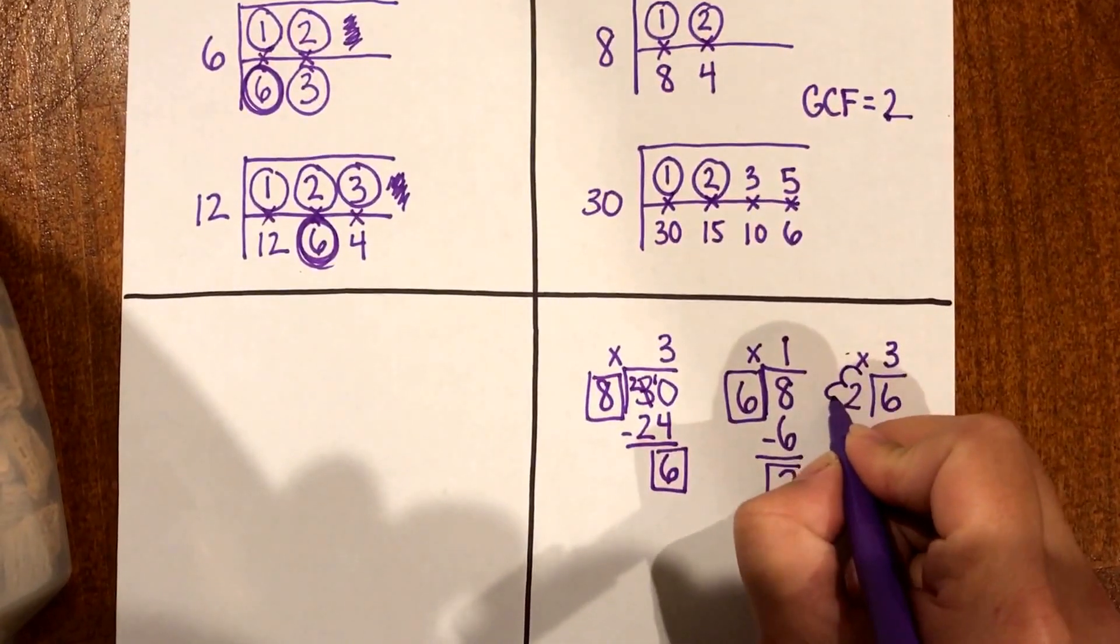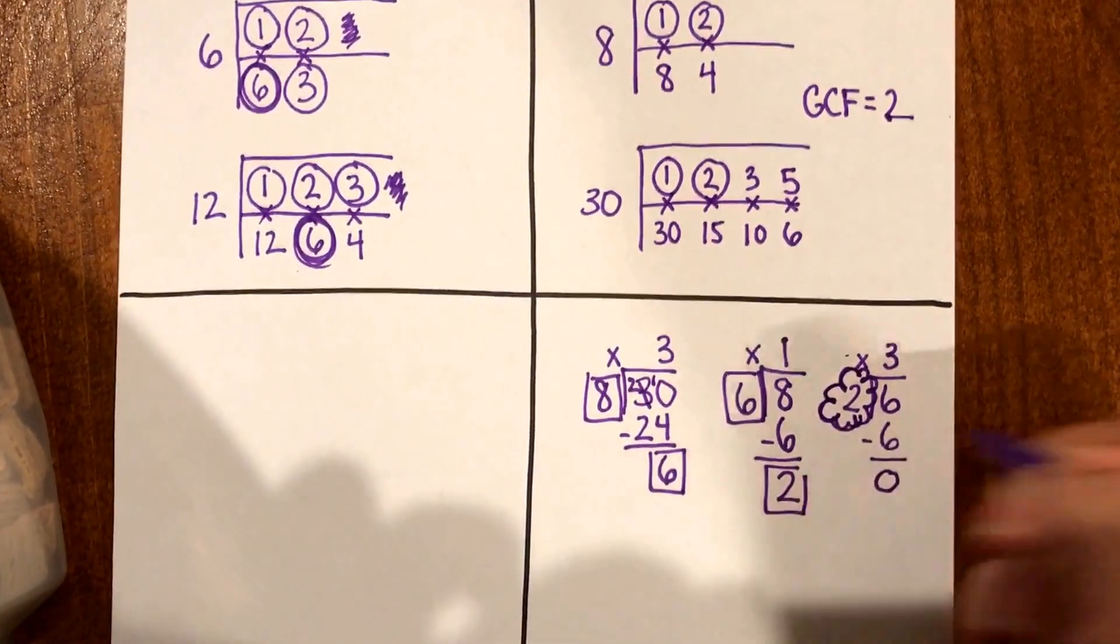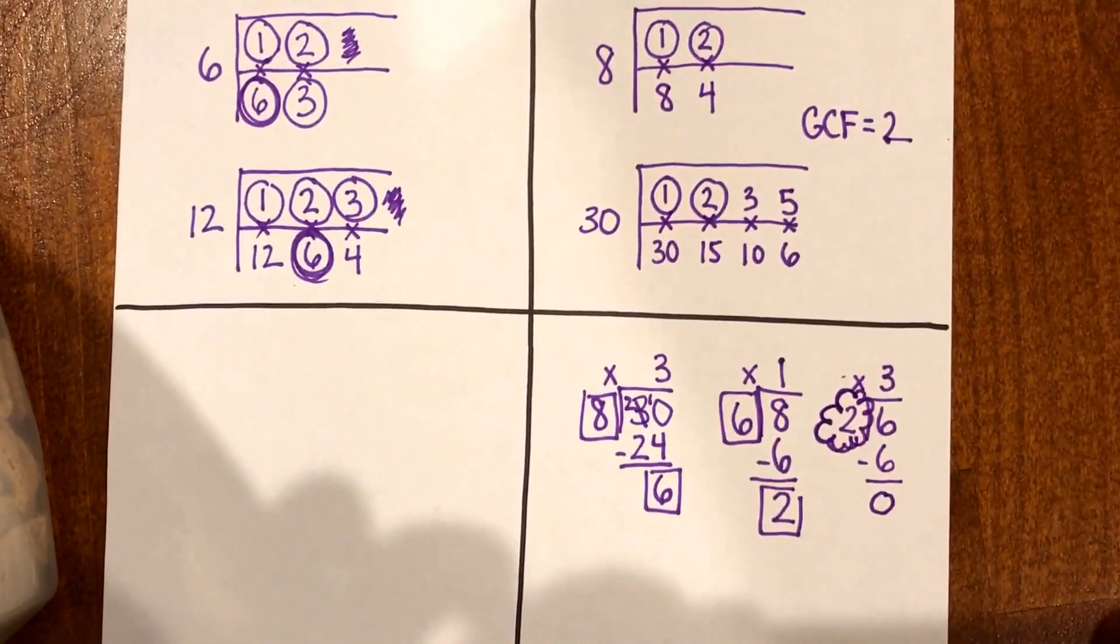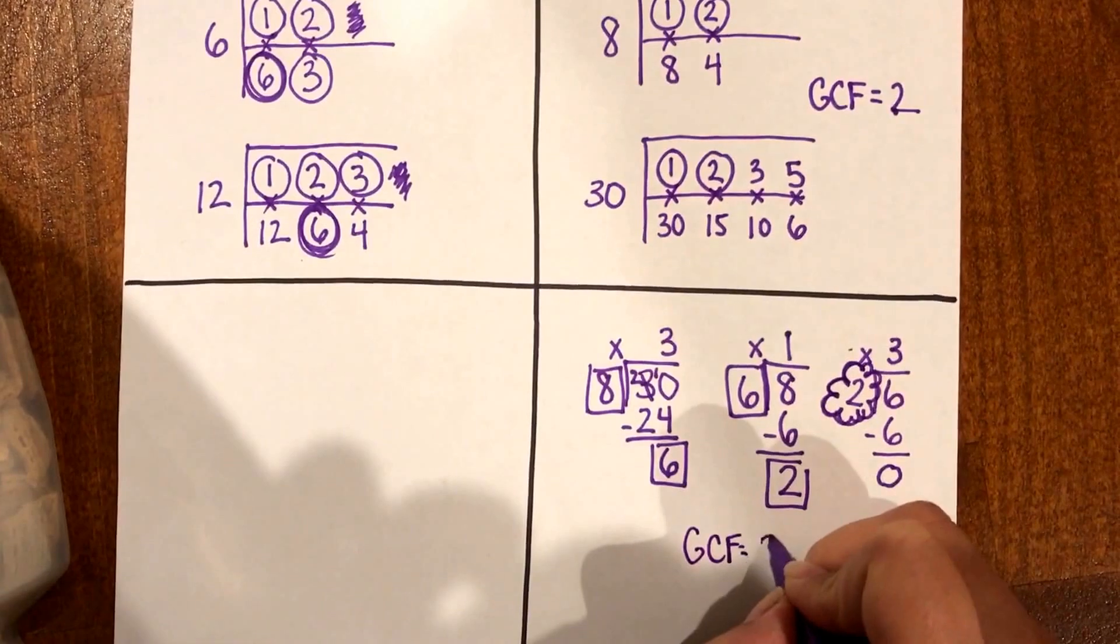Therefore I know that my divisor in my final division problem is going to be my greatest common factor. So I know that my GCF is going to equal 2.